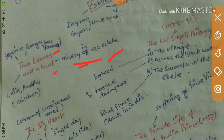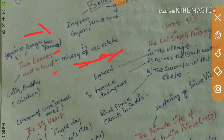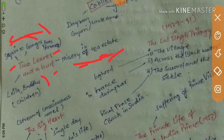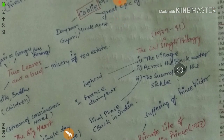Two Leaves and a Bird shows misery in a tea estate. There is a farmer named Gangu who becomes fascinated with working at the tea estate, but it ends pathetically and he realizes it was a great mistake. Sajani is Gangu's wife, and they have two children named Laila and Buddhu.